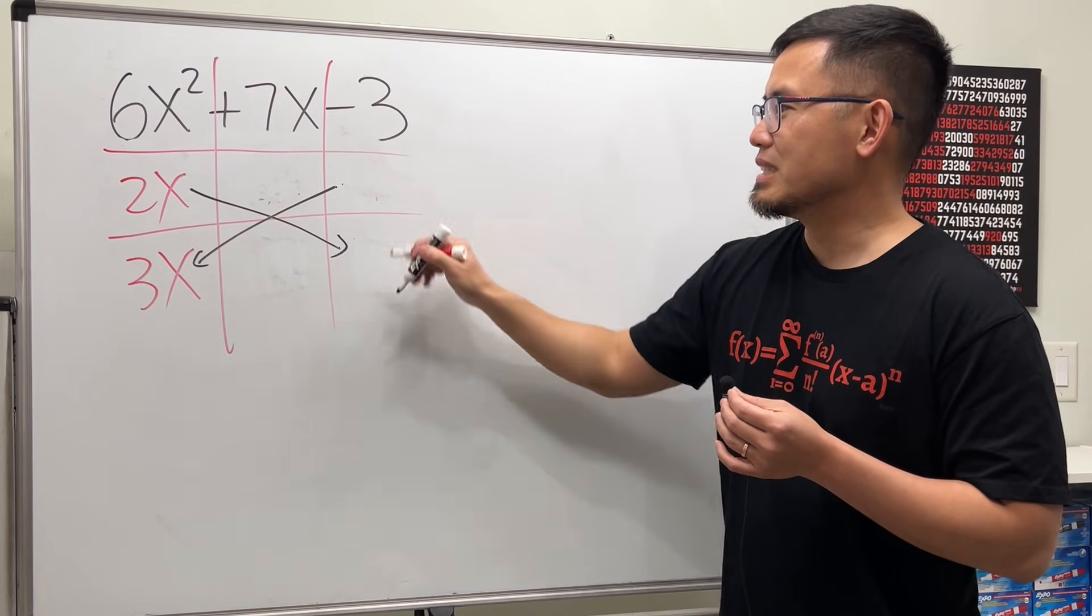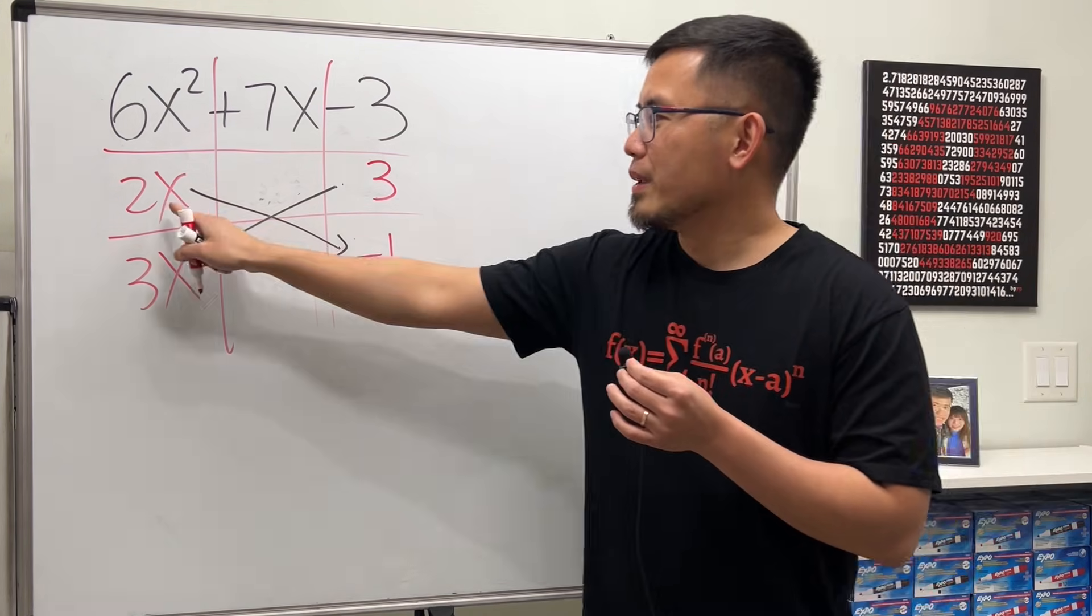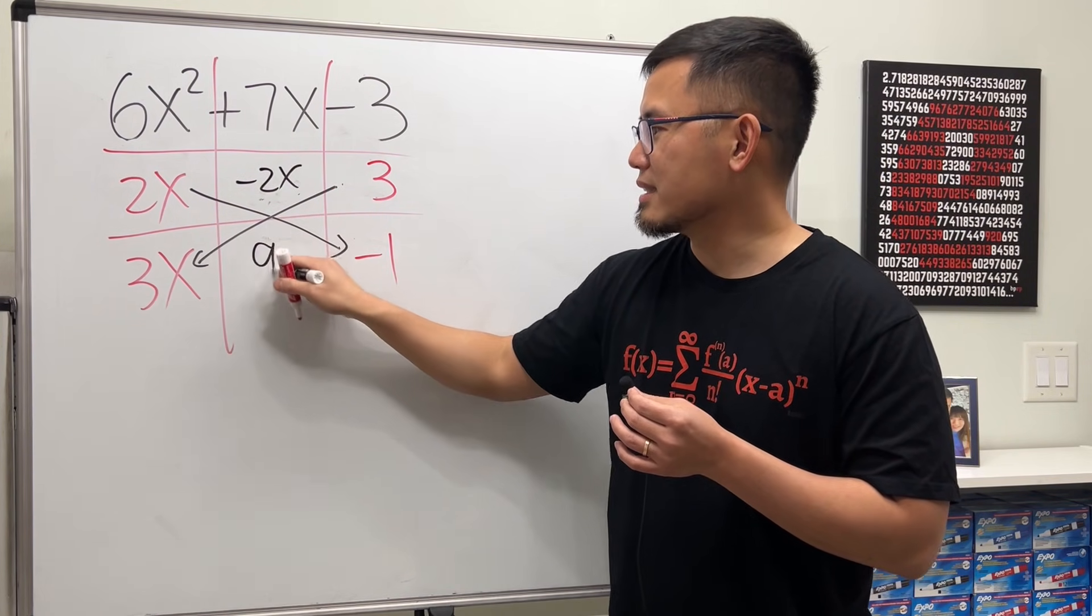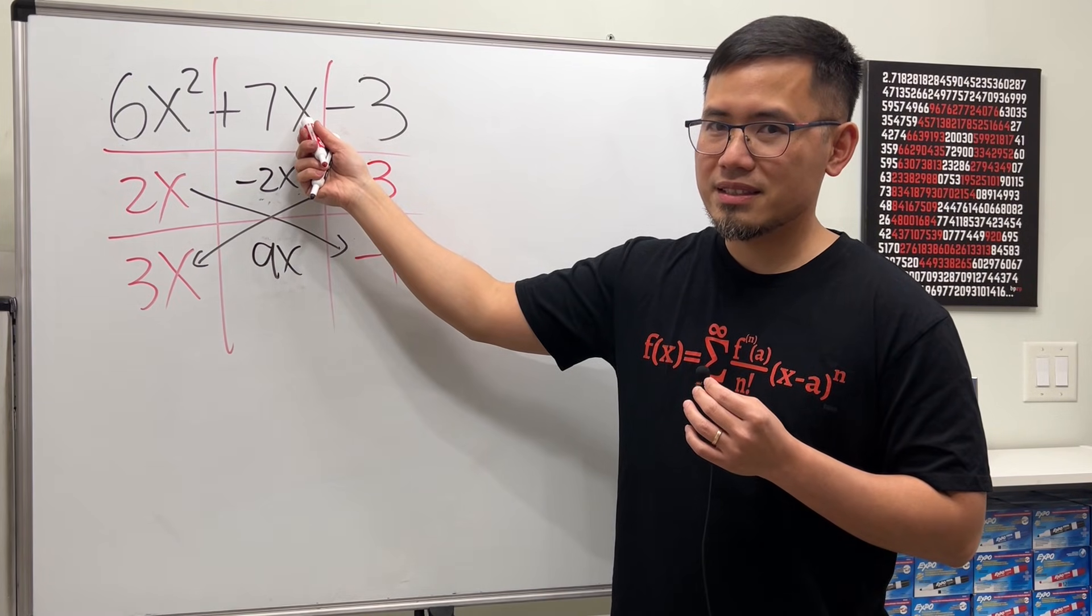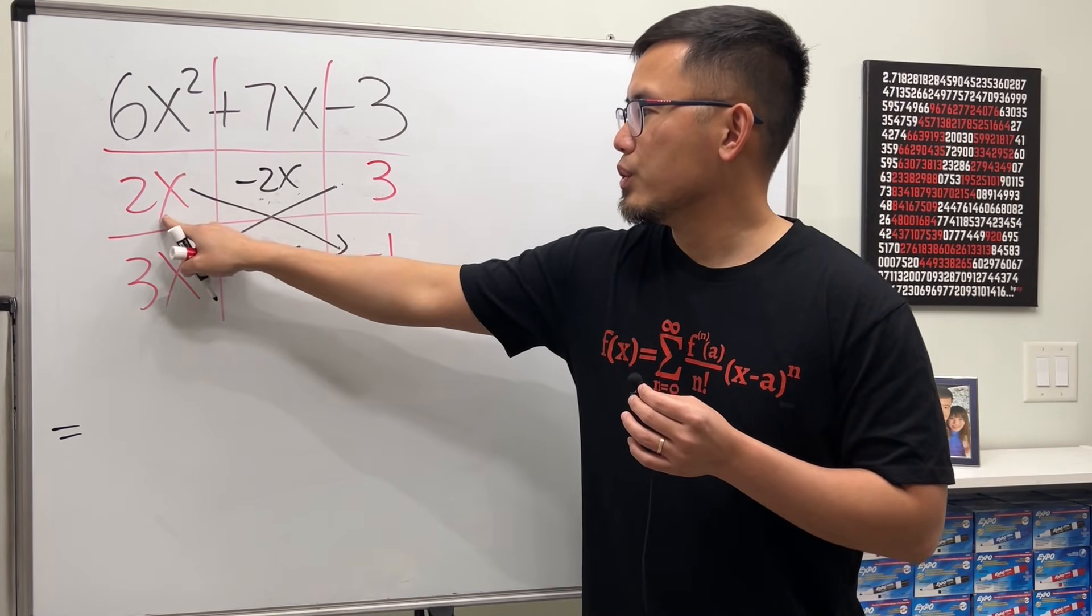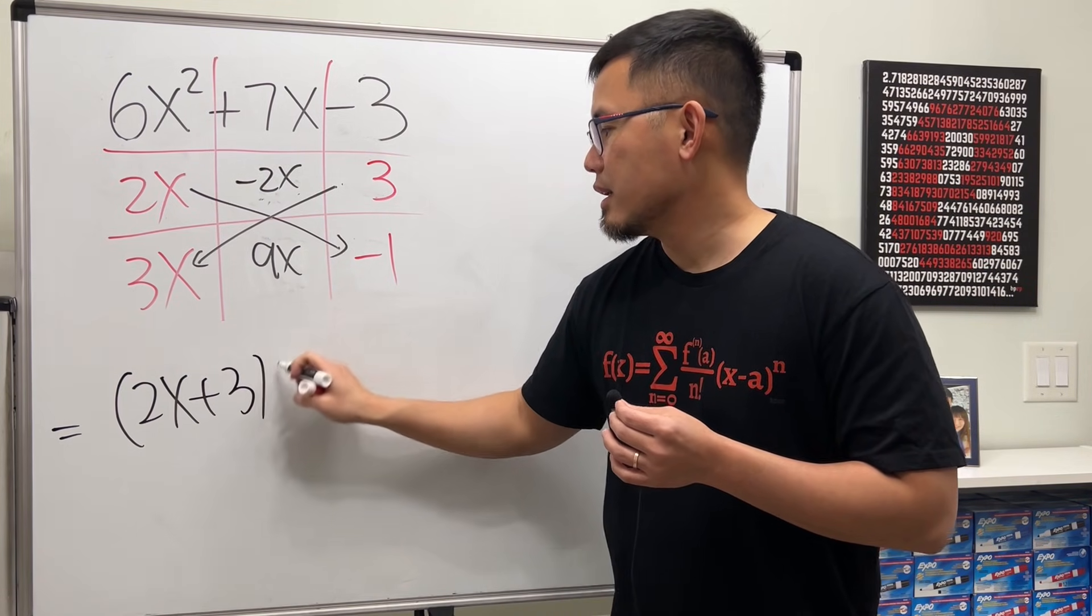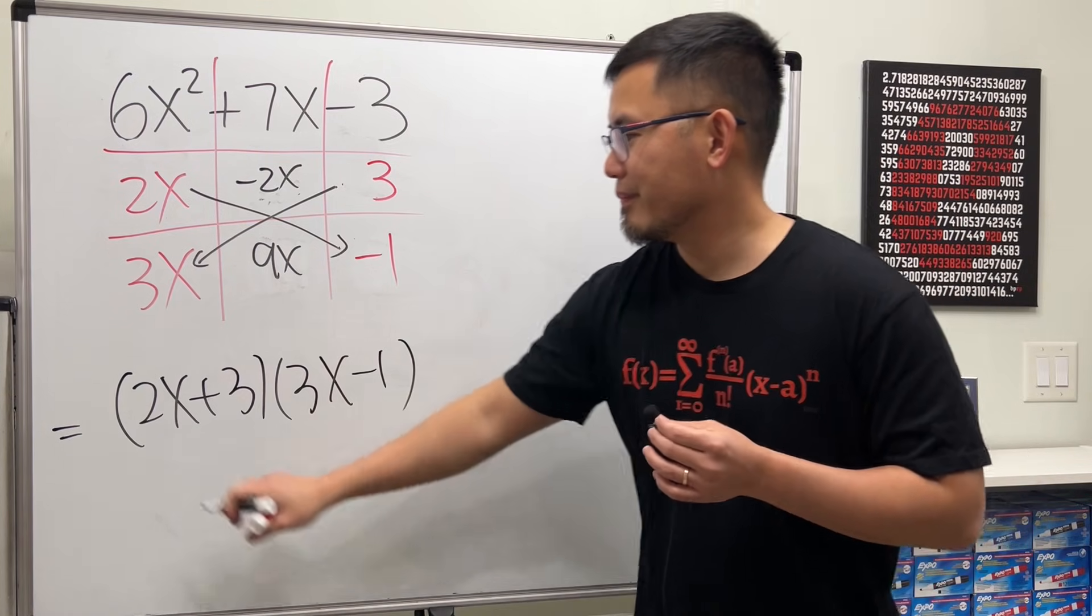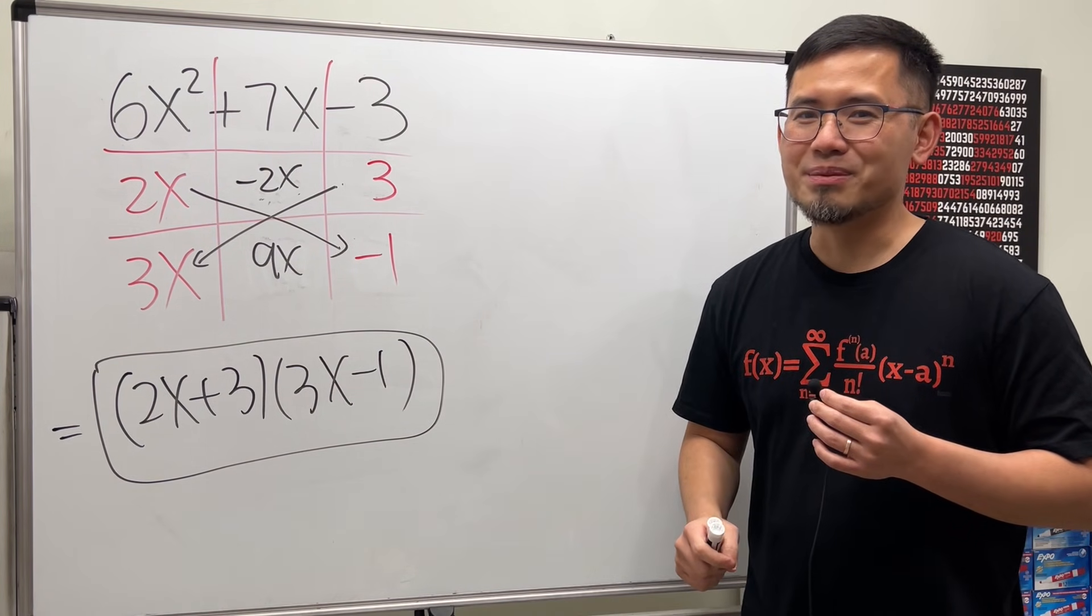The correct combination for this is, we put a 3 here and negative 1 here. 2x times negative 1, we get negative 2x. 3 times 3x is 9x. Together, we do get a positive 7x. Now, when we write down the answer, we read it across: 2x plus 3 times 3x minus 1. Just like this. Let me know which way you like the most.